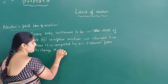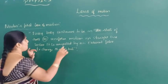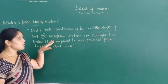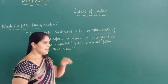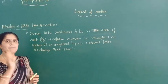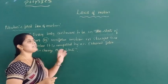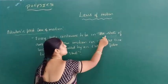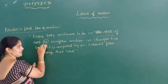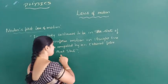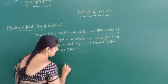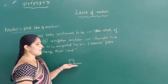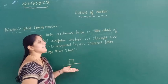This law is very important. Every body continues to be in its state of rest or uniform motion in a straight line unless it is compelled by an external force to change that state. So it has two parts. In the first part, every body continues to be in its state of rest unless it is compelled by an external force to change that state. For example, if a block is placed on the table, that means the block is at rest on the table.